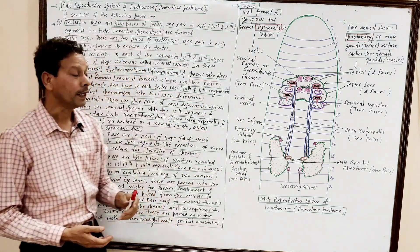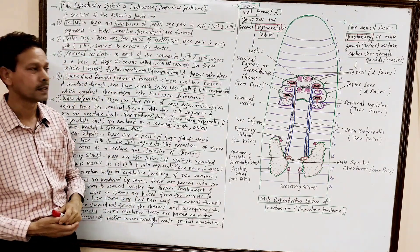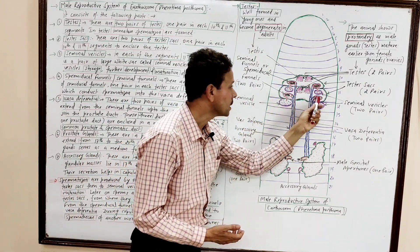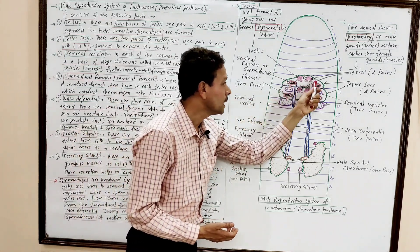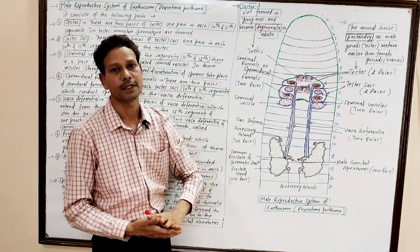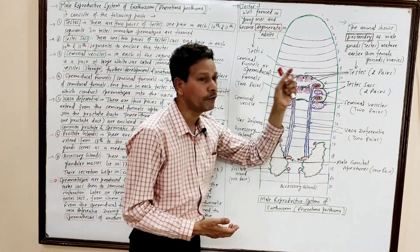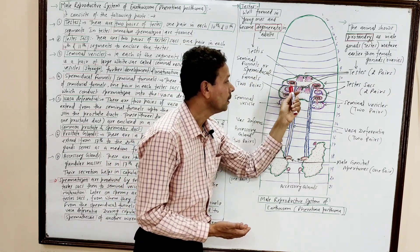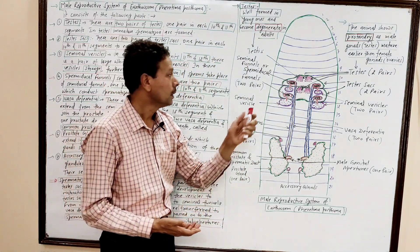The fourth part is the seminal funnels, also called semiducal funnels. There are two pairs of seminal funnels, one pair in each segment number 10 and segment number 11.